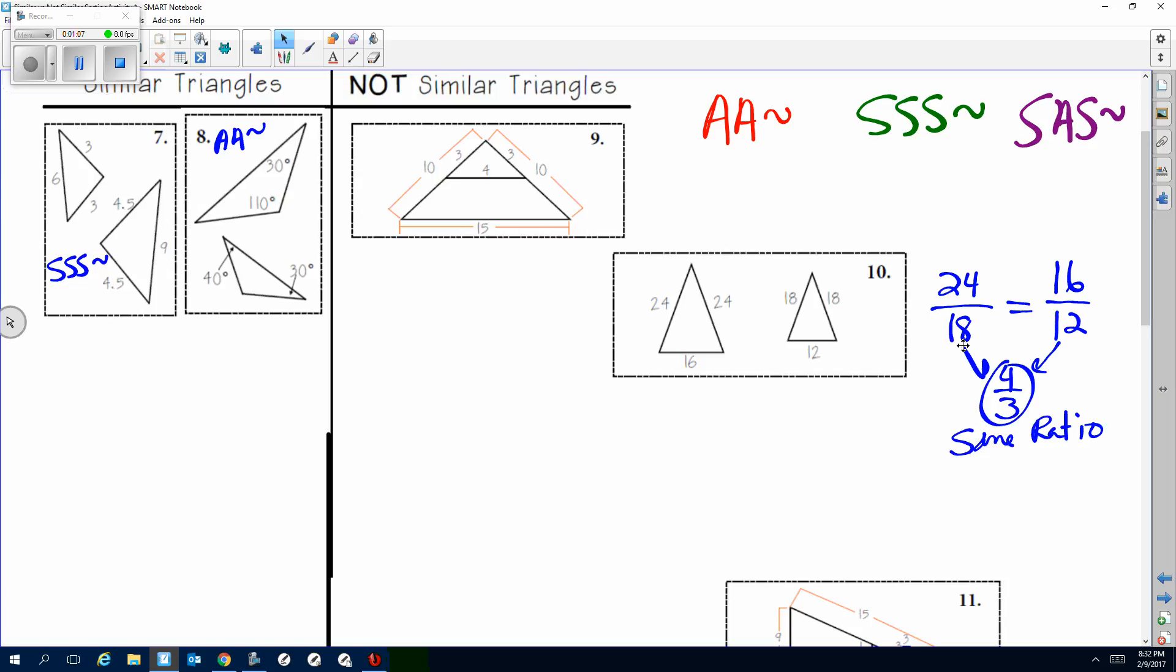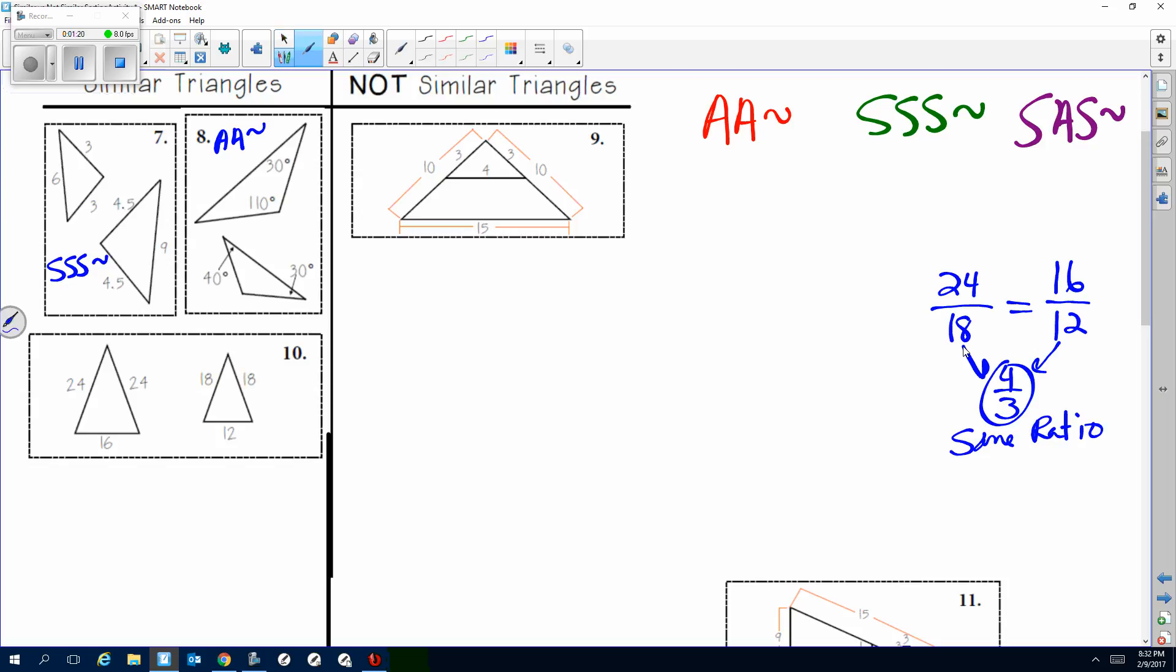Okay, so since I had the same ratio, it's similar. Therefore, this number 10 is going to go over here in this pile, and it would be similar by side side side similarity, okay, side side similarity.